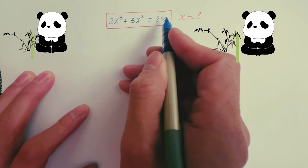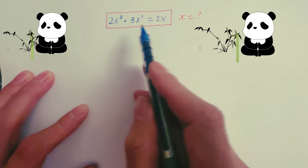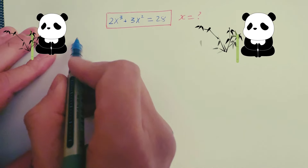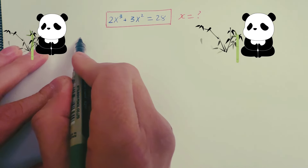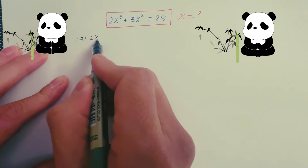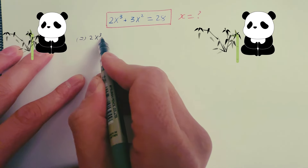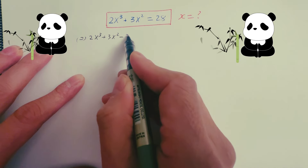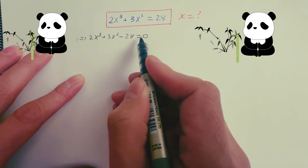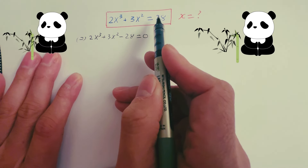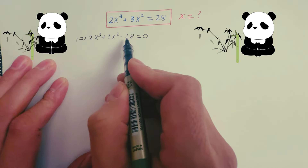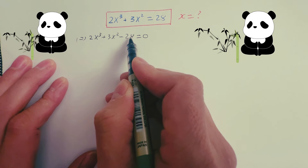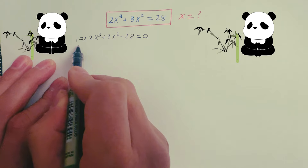Now, 28 is on the right hand side. I move 28 from the right hand side to the left hand side. So I got the equation 2x cubed plus 3x squared minus 28 equals zero. Because 28 on the right hand side is positive, when you move it to the left hand side it becomes negative.